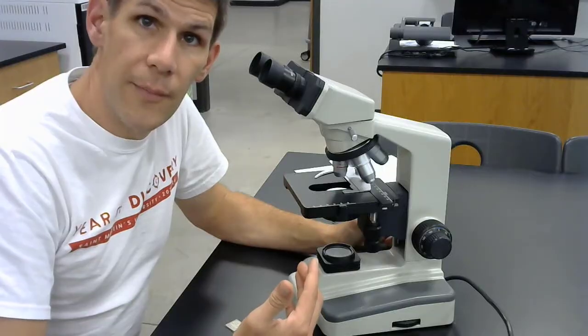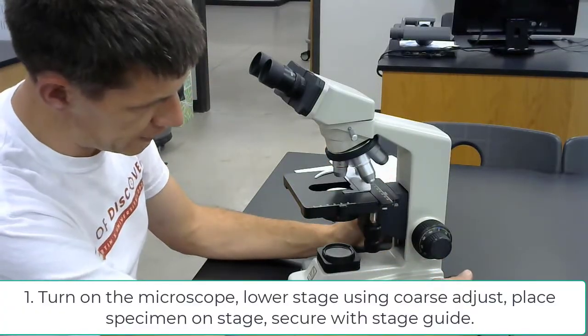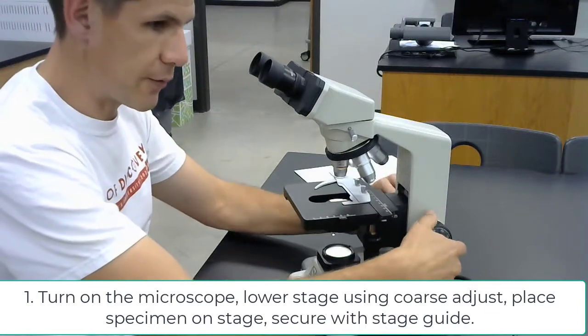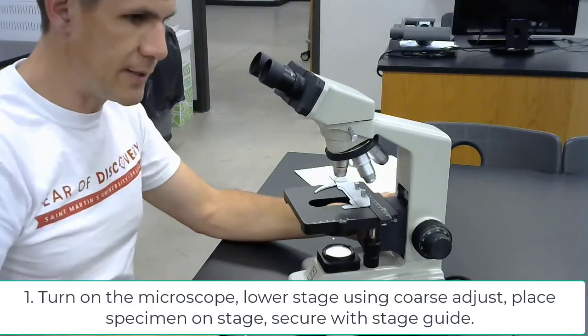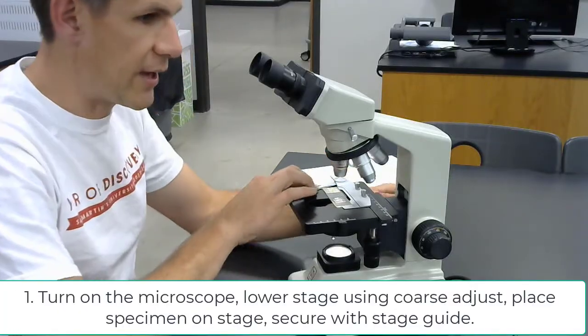So how would we look at something on the microscope? Well, first I'm going to turn on the microscope here in the back, and then I'm going to lower the stage using the coarse adjustment, and I'm going to put the specimen here and secure it using the stage guide.